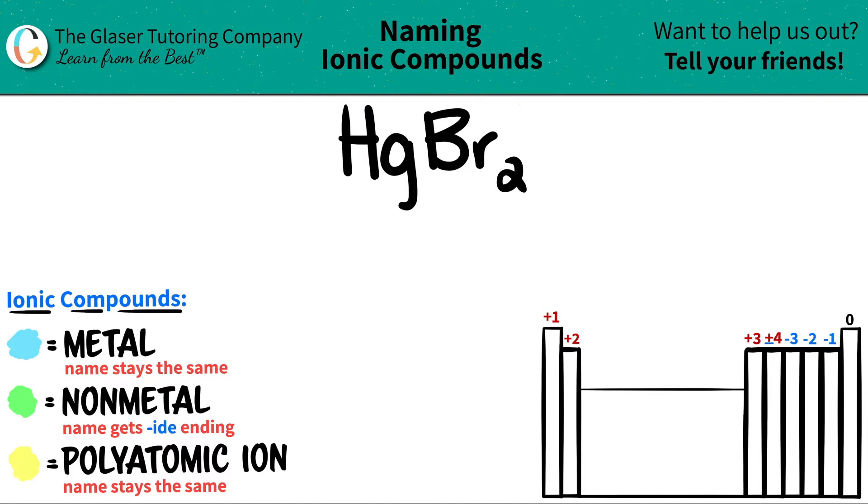Now we have two different elements here. We have Hg, which is mercury, and we have Br, which is bromine.